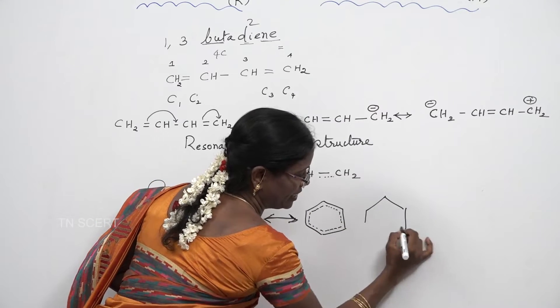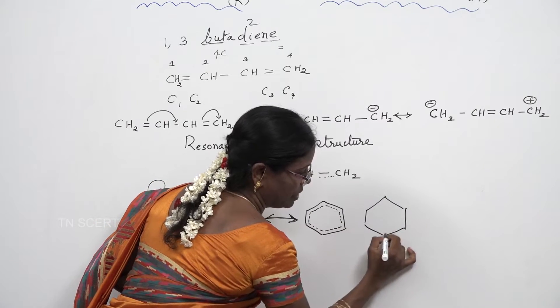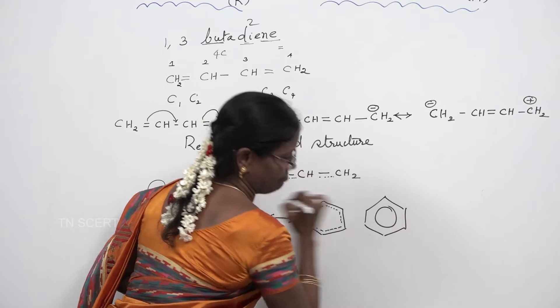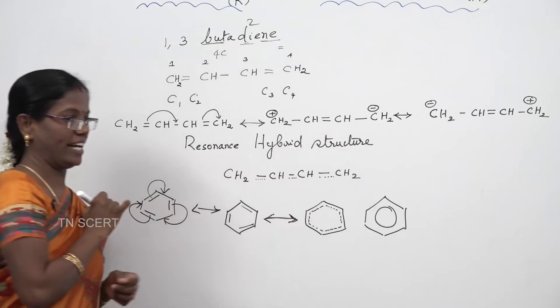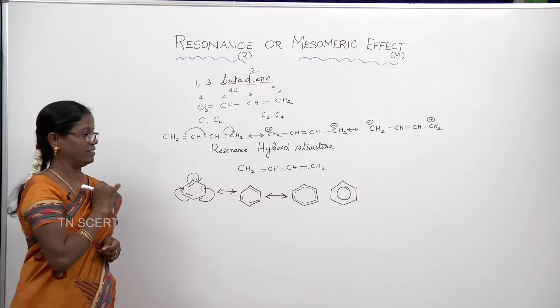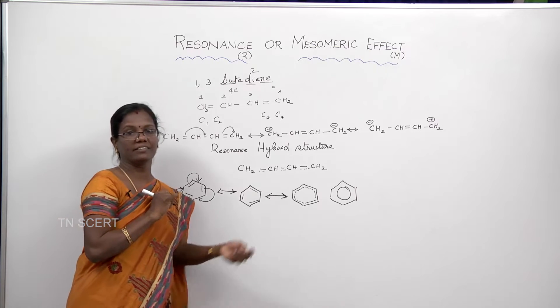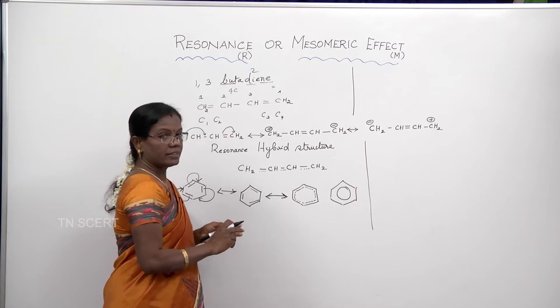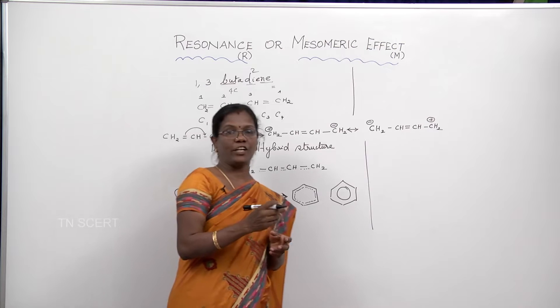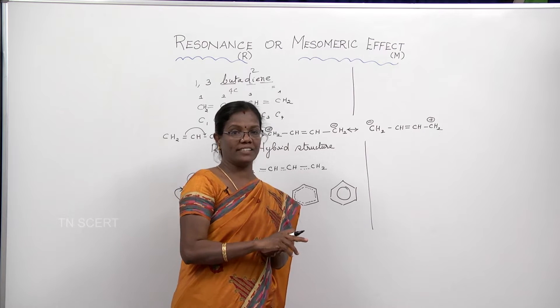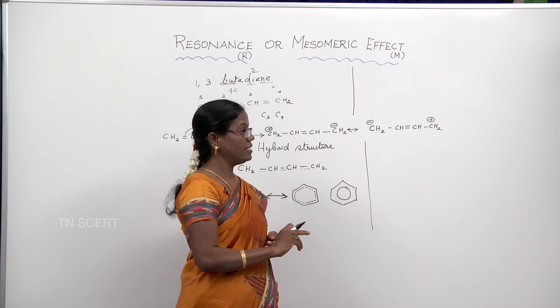For this reason, benzene is denoted with a circle inside the hexagonal ring. Resonance can also be called mesomeric effect.